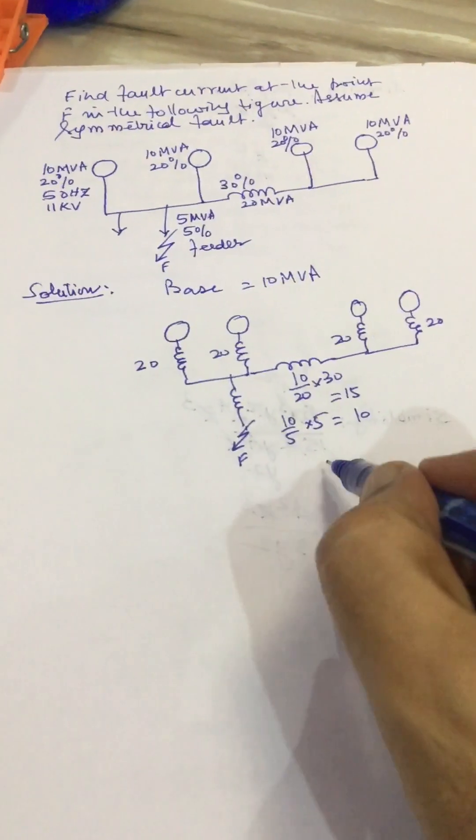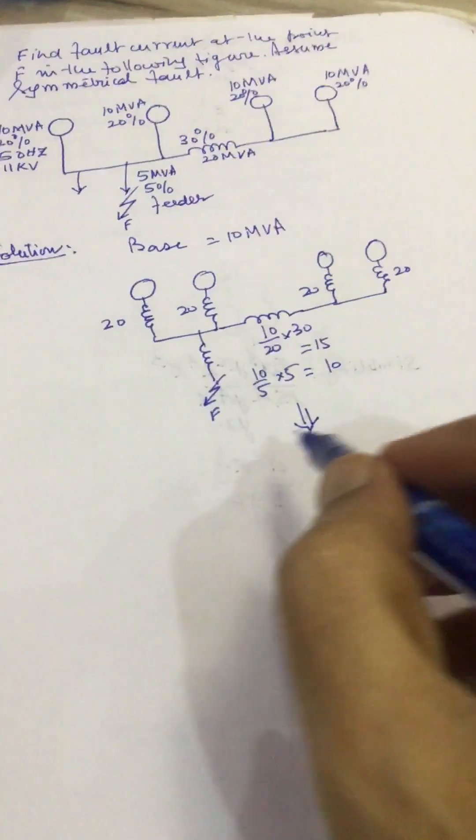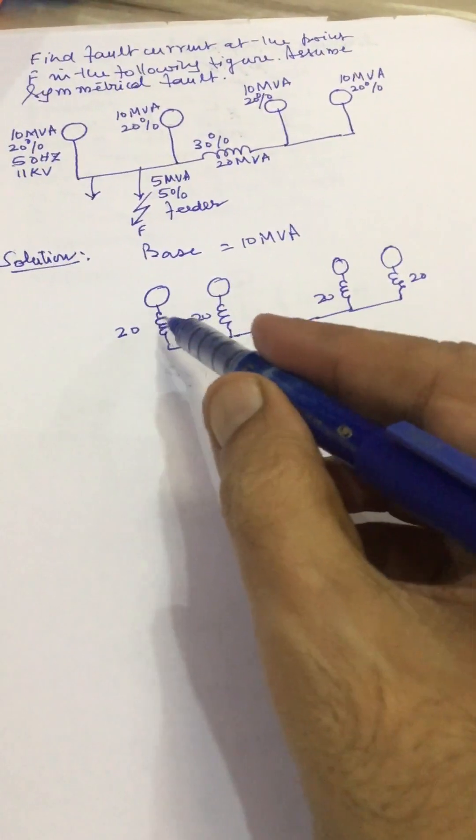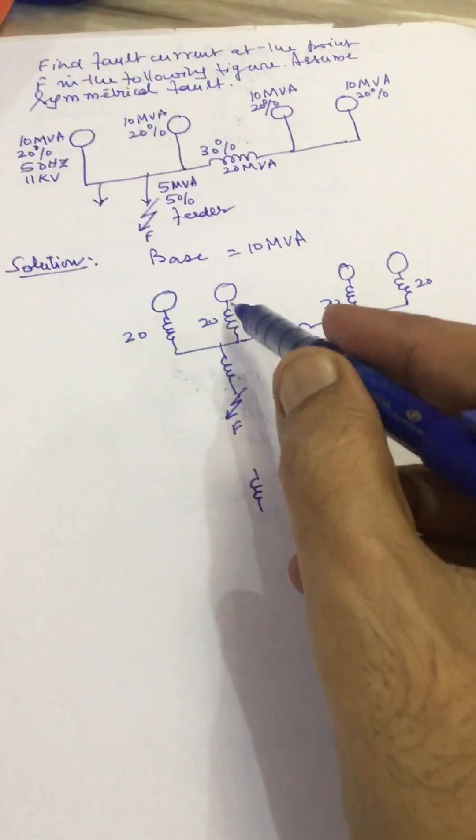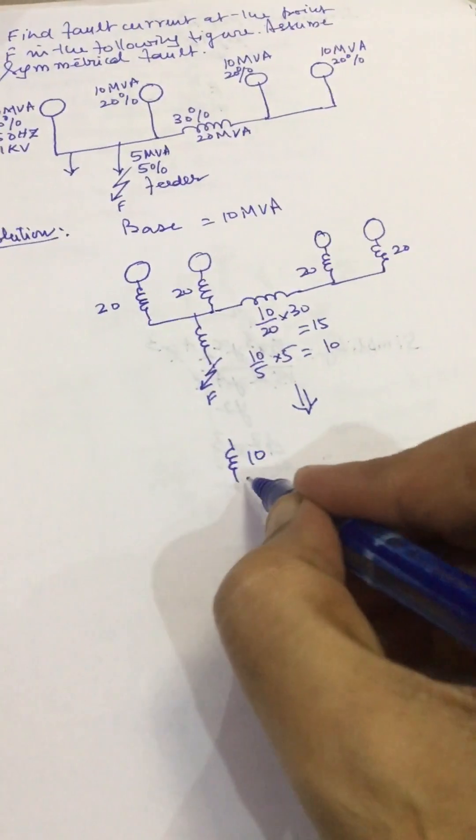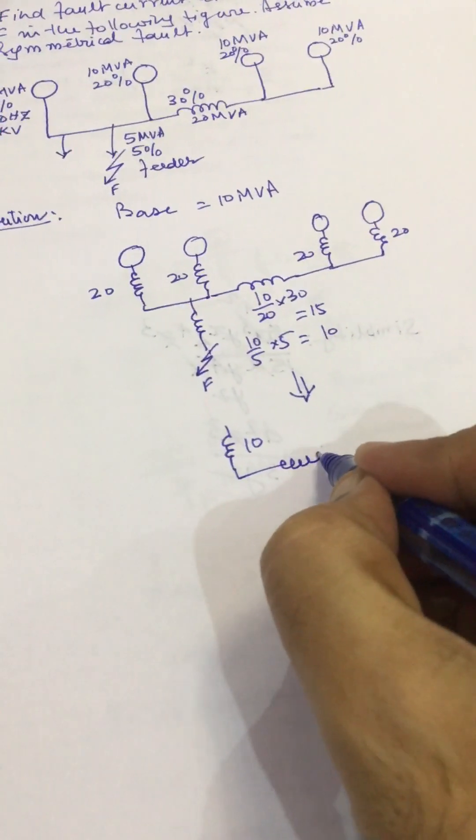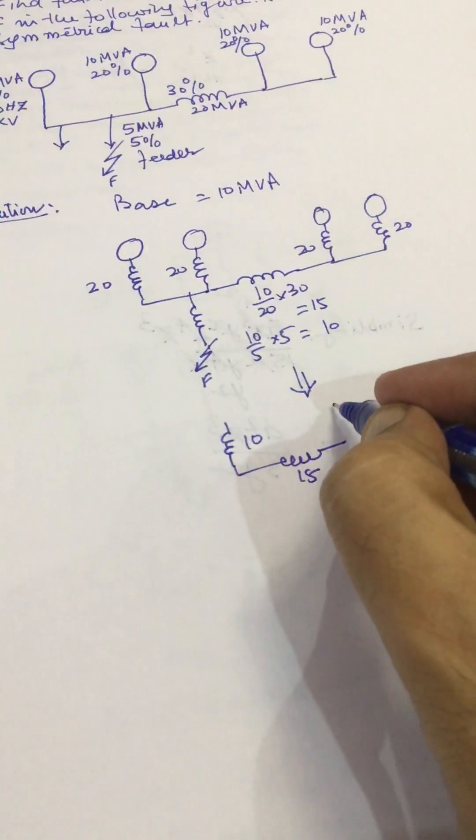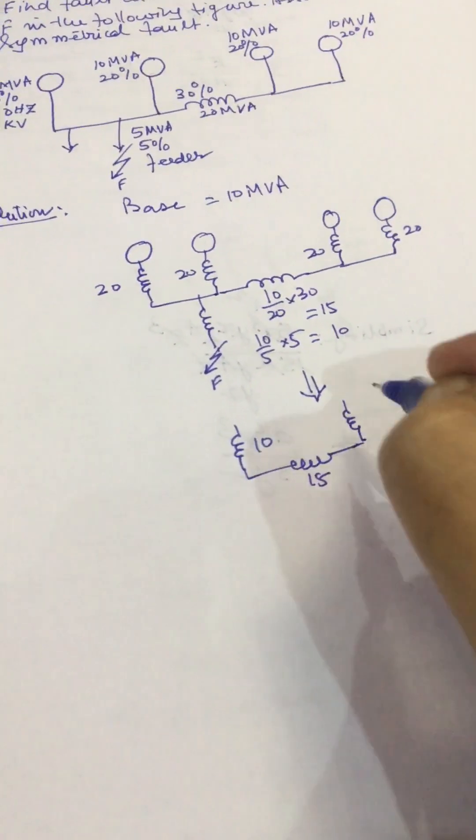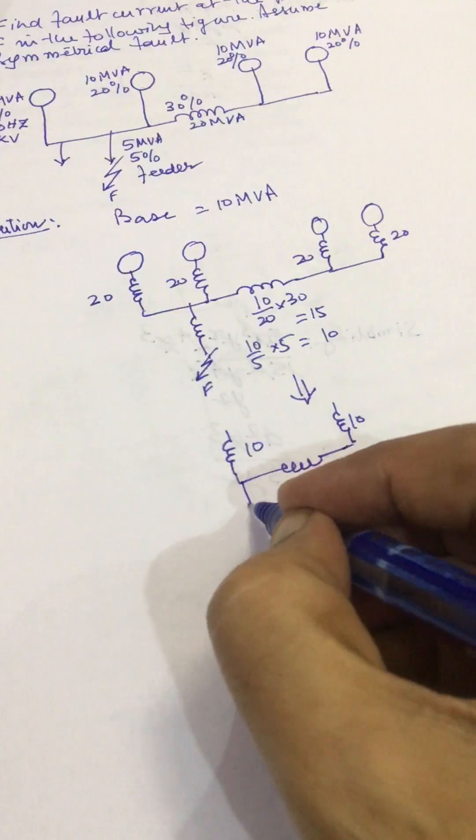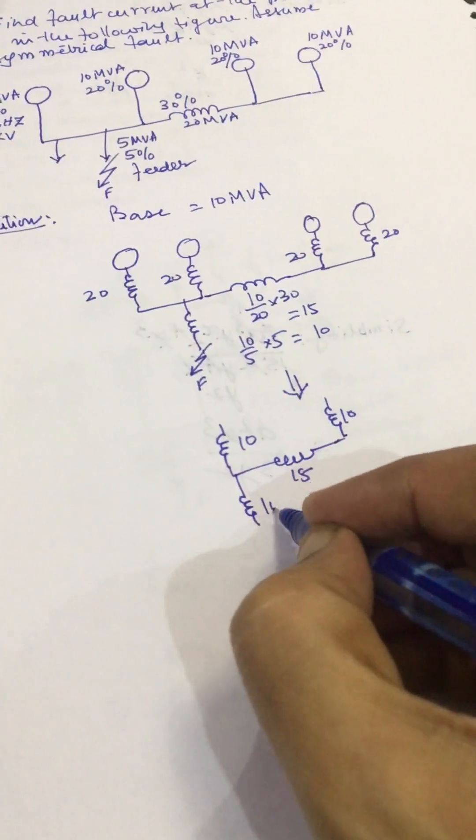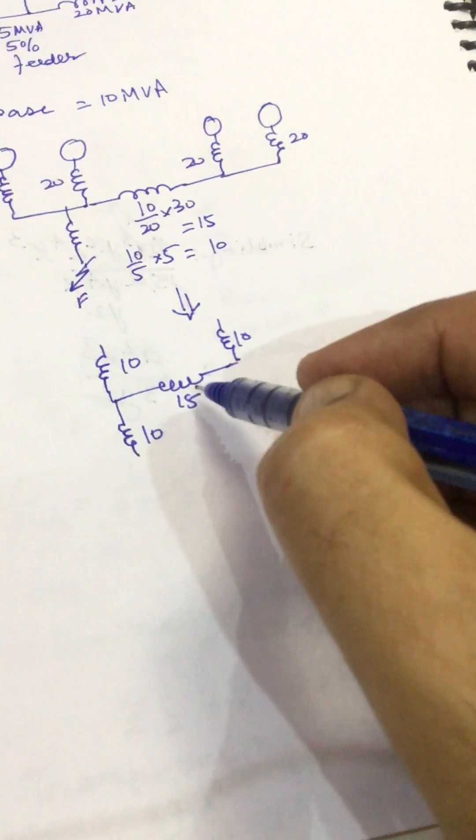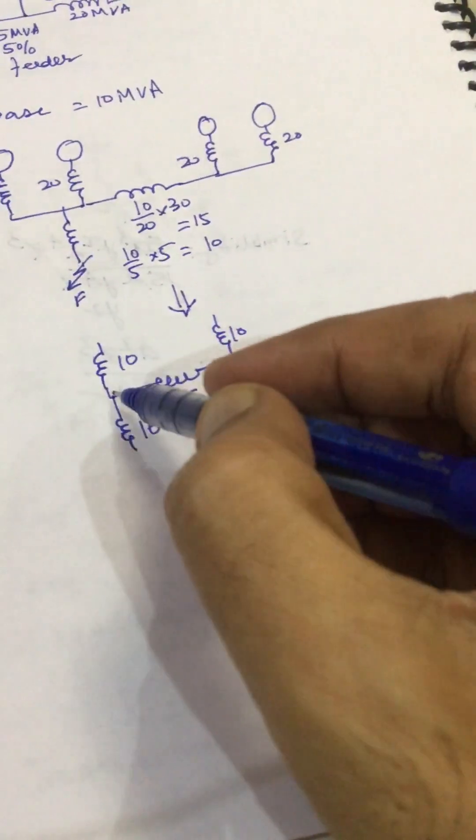This becomes 10 because those 20 percents are connected in parallel. So this becomes 10, this becomes 15 and this becomes 10 and here this becomes 10. These are in series and in parallel with this and they are in series.